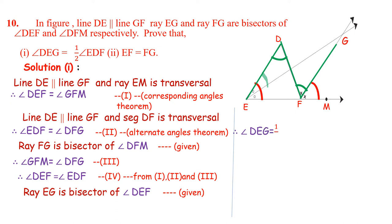Therefore, angle DEG is half of angle DEF. This is statement number 5. Now from statements 4 and 5, angle DEF is equal to angle EDF. Therefore we replace DEF by angle EDF.